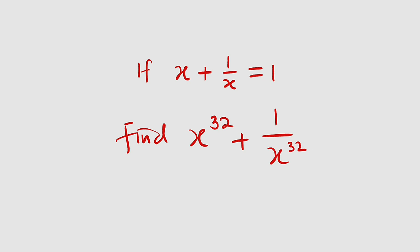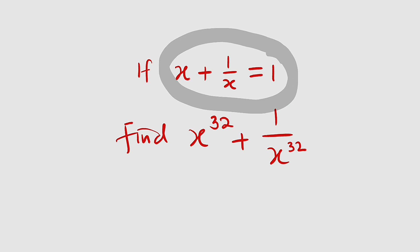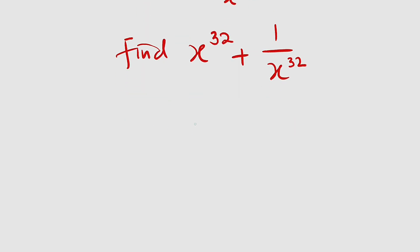Alright, I want us to make use of this equation in order to find the value of x to the power of 32 before we substitute it back into this expression. This is the first equation. I want us to square both sides.